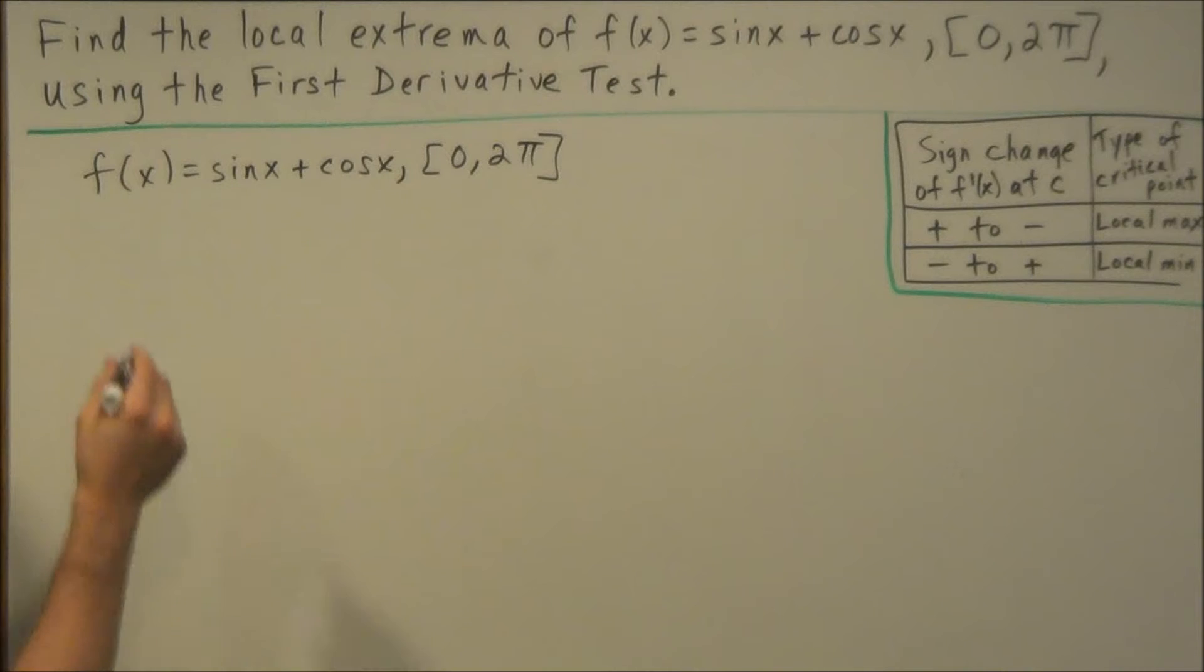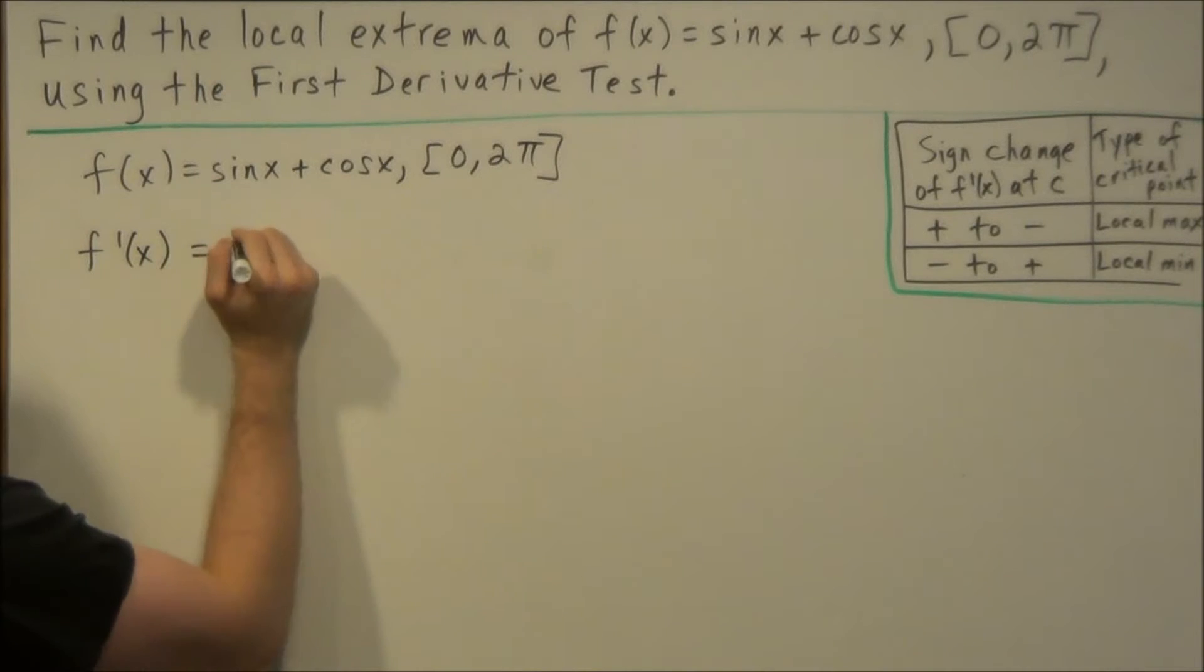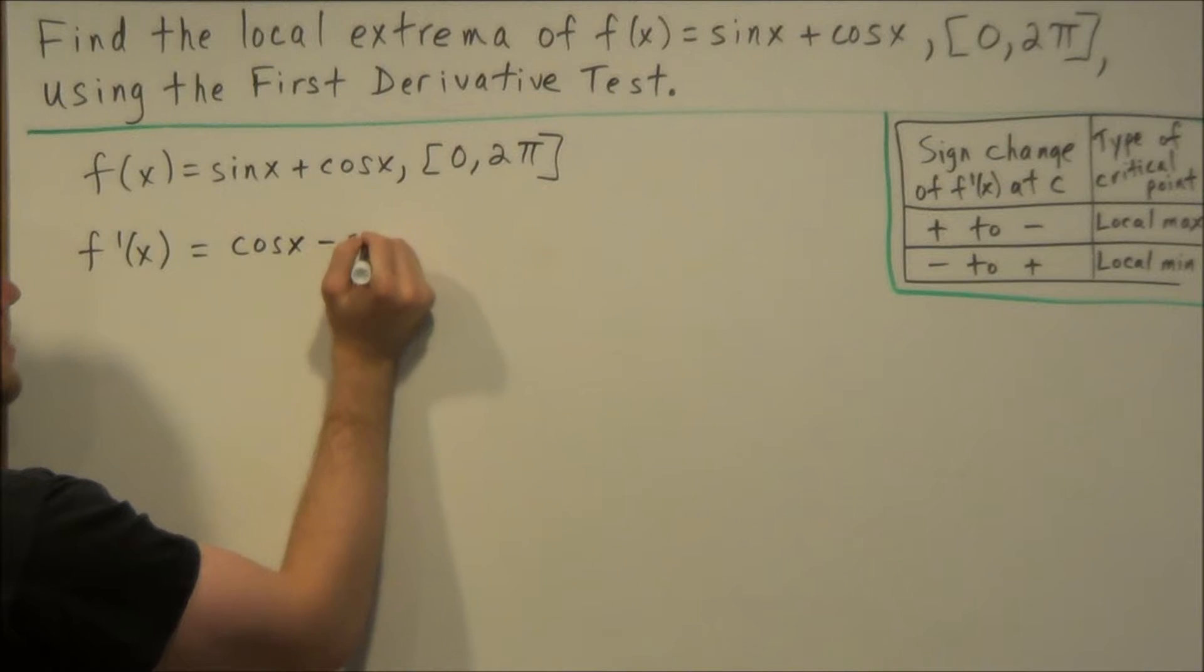The first thing we need to do is find the first derivative. So we're going to find f'(x), and we have here the derivative of sine is cosine, and the derivative of cosine is negative sine x.